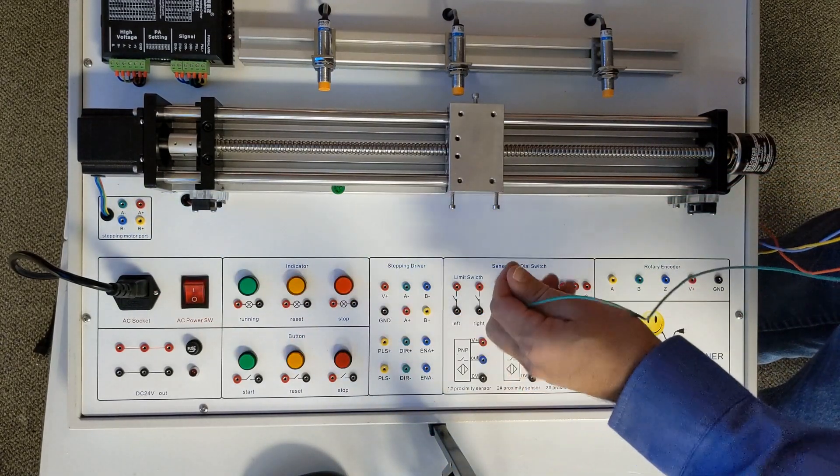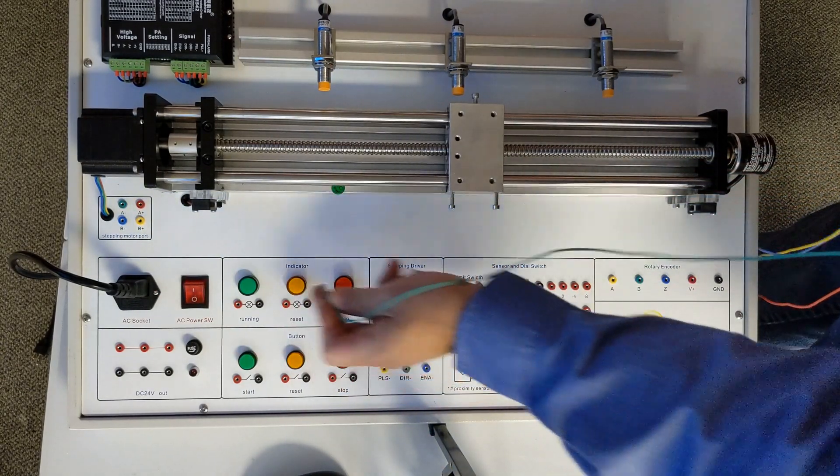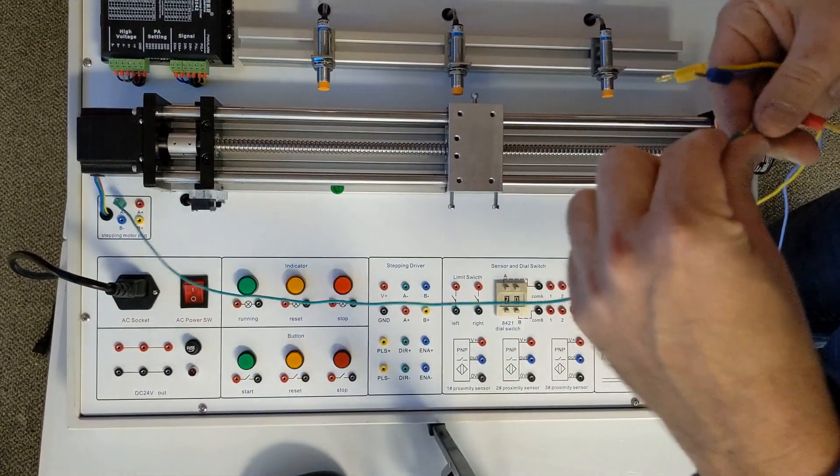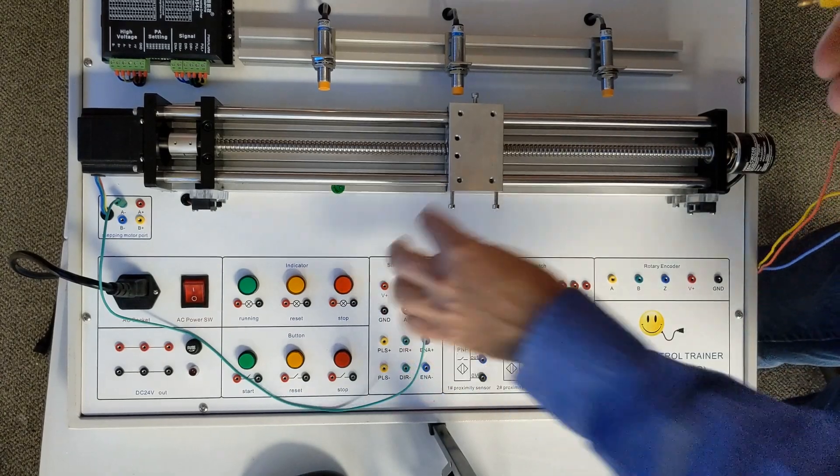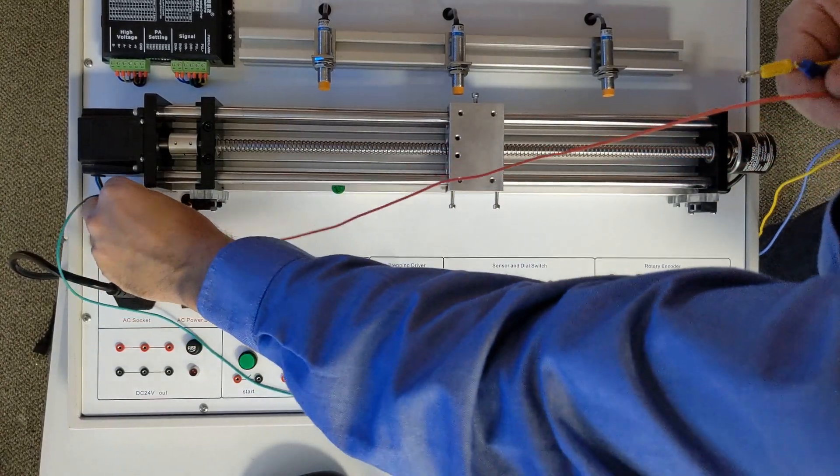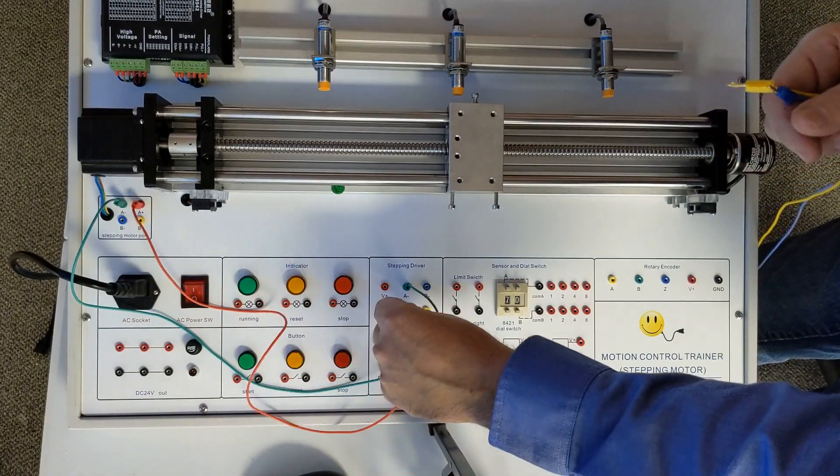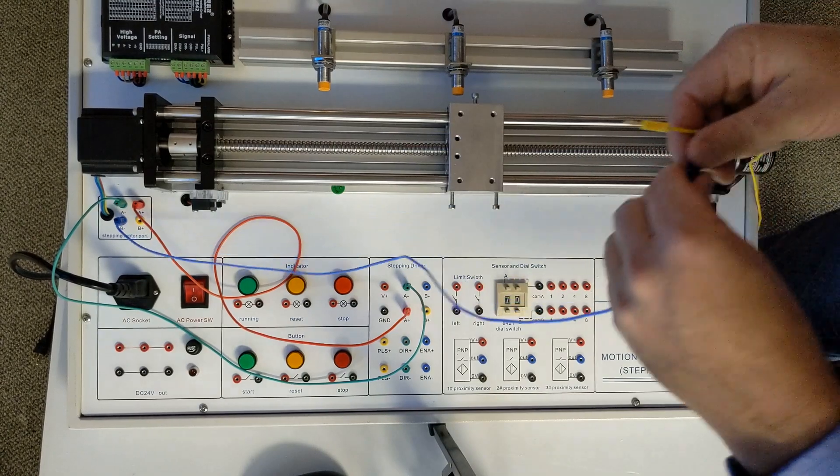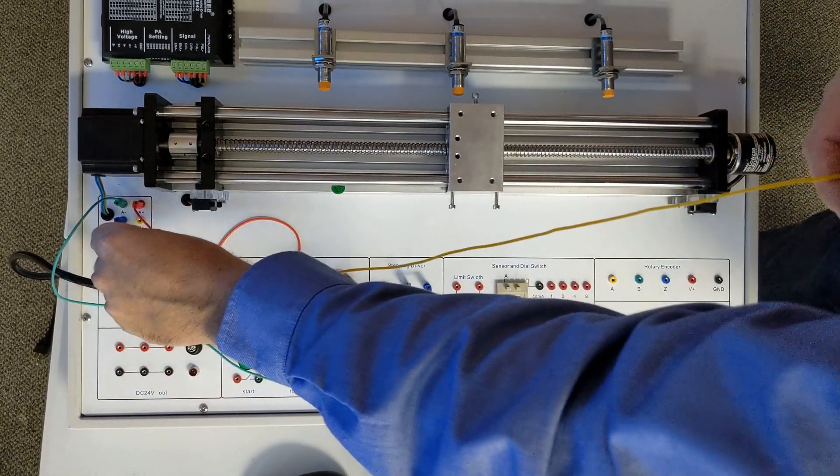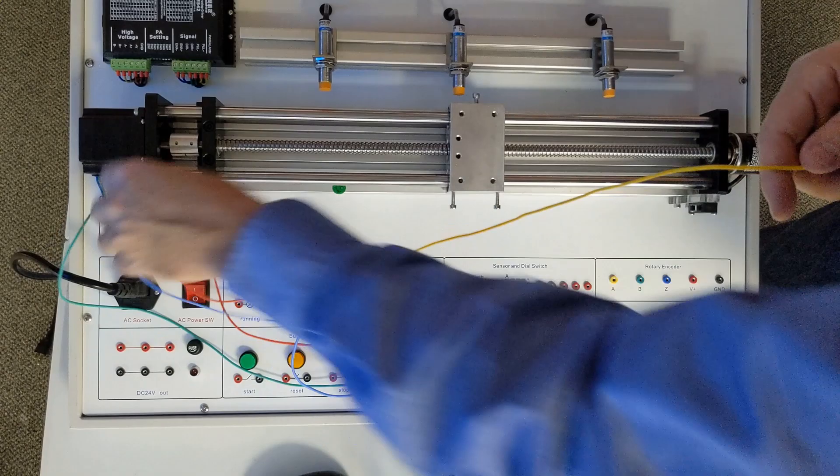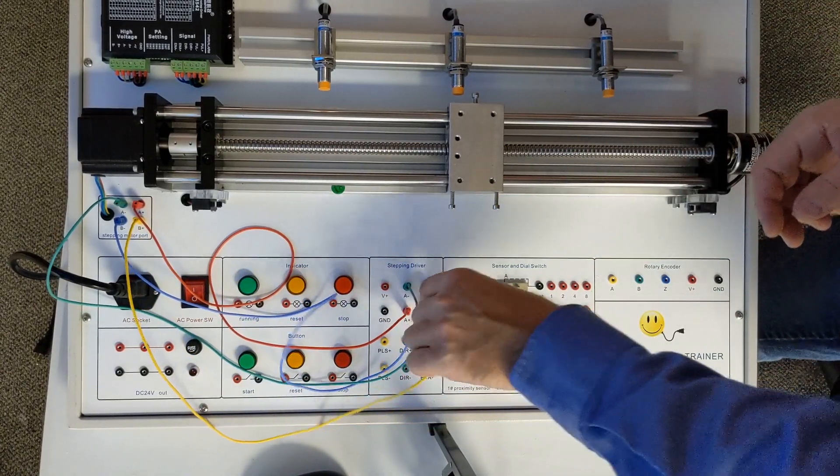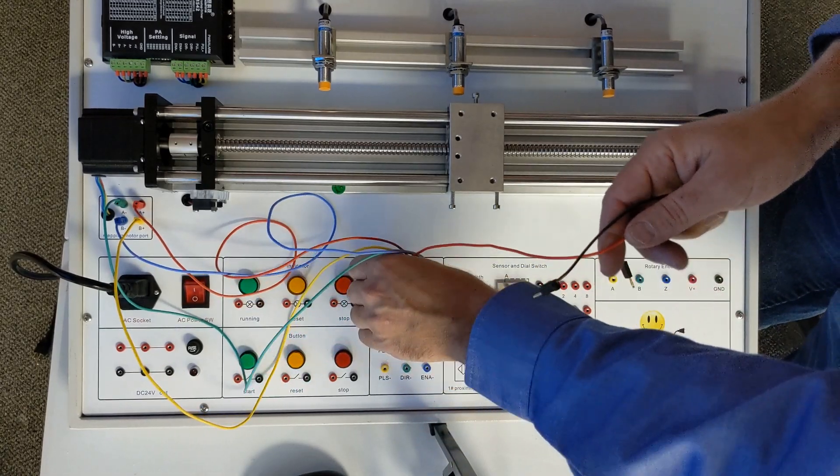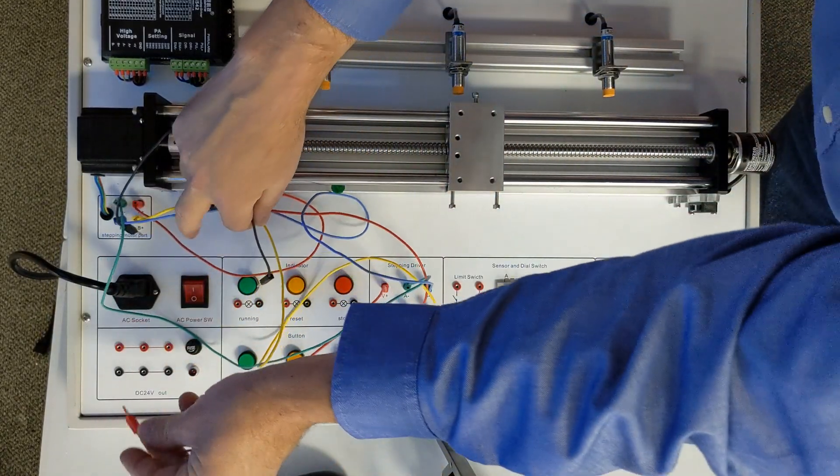To start with, with the power off, we're going to connect our stepper motor to our stepper driver. You can go color to color and also the signals are matched. So we have A minus green going to A minus green, we have A plus red going to A plus red, we have B minus blue going to B minus blue, and we have B plus yellow going to B plus yellow.